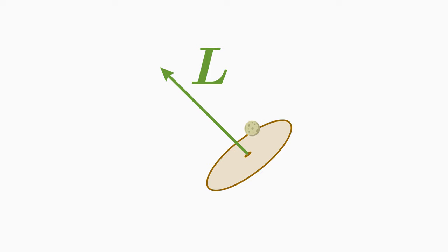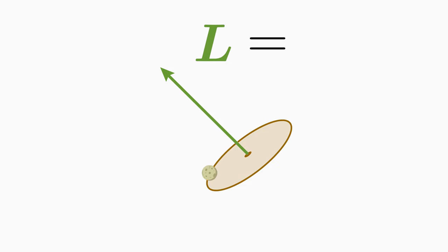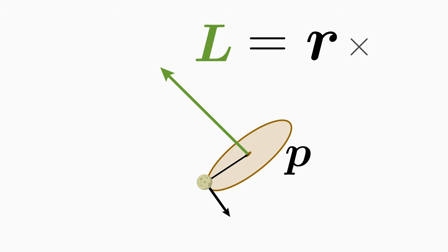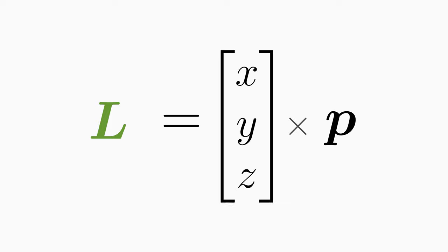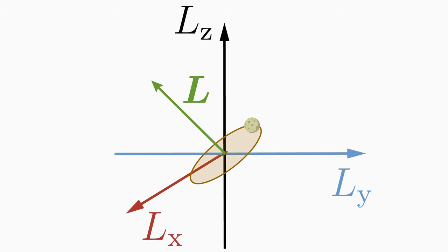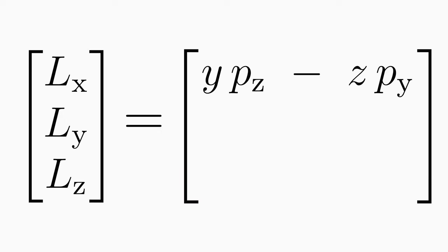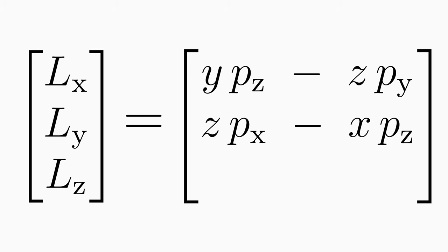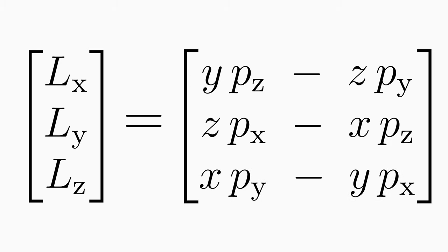The angular momentum, or more precisely orbital angular momentum L of a classical particle, is given by the cross product between the distance r of the particle from the axis of rotation and the particle linear momentum p. If we write out this cross product, we get the individual components of the angular momentum vector Lx, Ly, and Lz, which indicate the magnitude of the angular momentum in the X, Y, and Z directions.